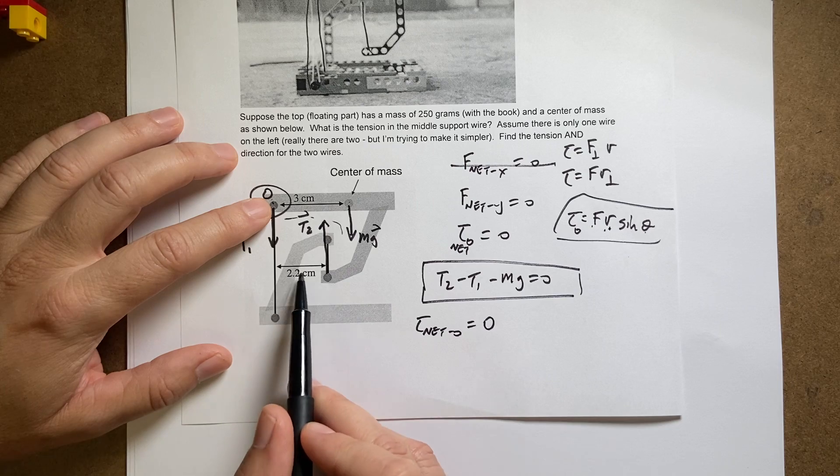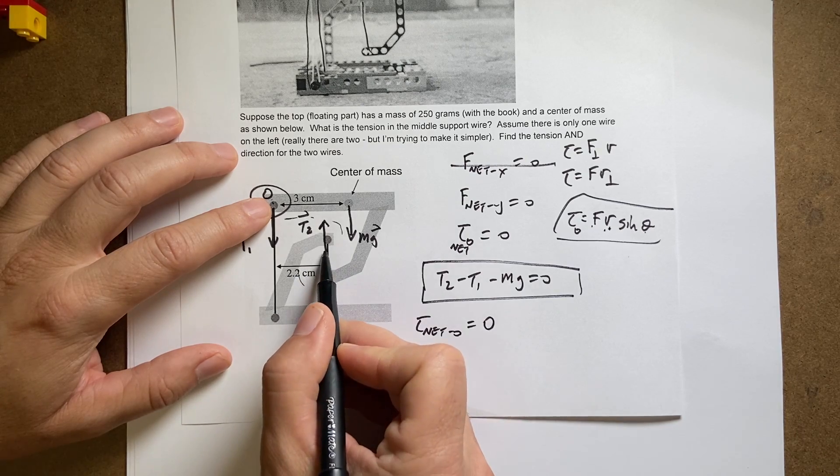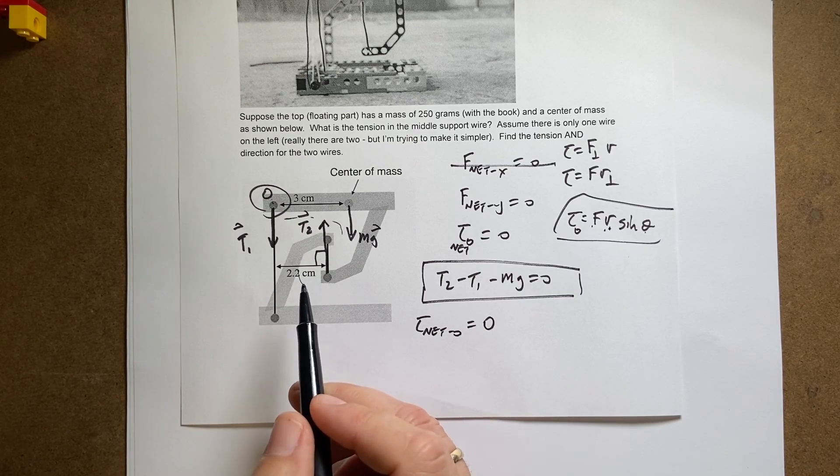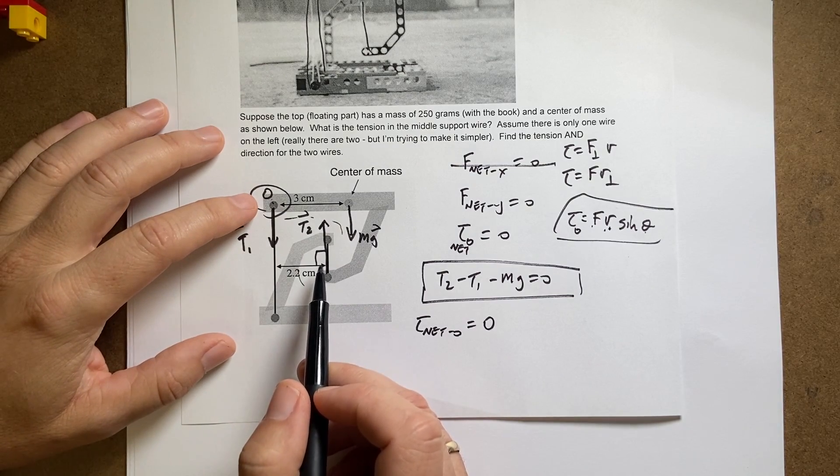So I'm going to use this distance right here for this tension. Now, is that going, and it's a 90 degree angle between those two, so it's just going to be this tension times 2.2 centimeters. I'll convert that to meters, even though you don't have to.